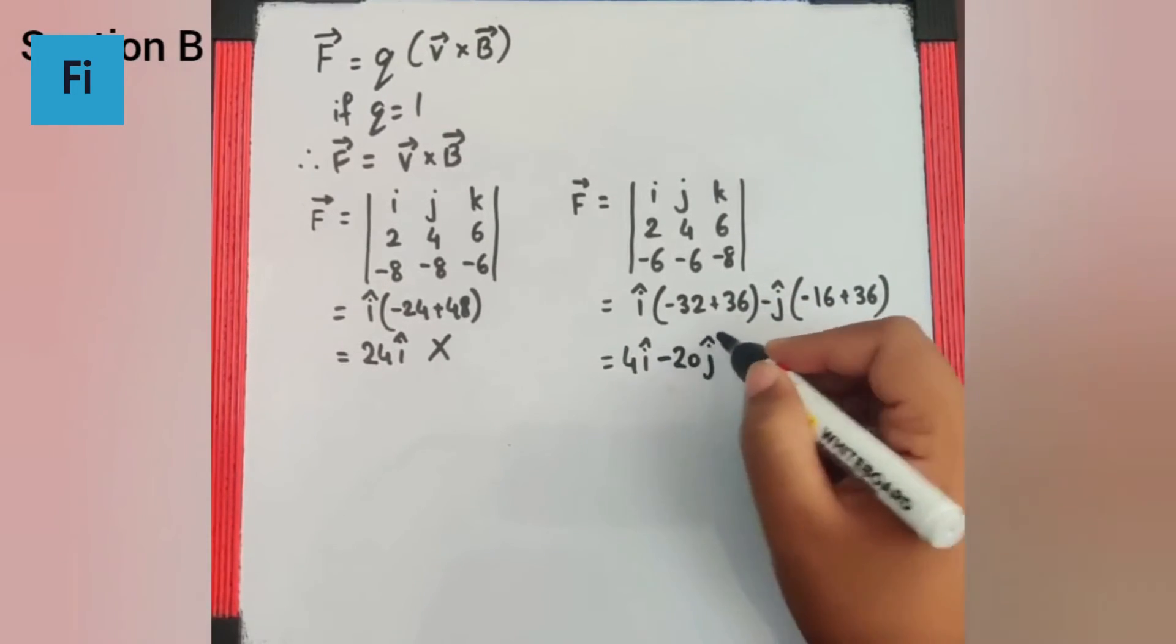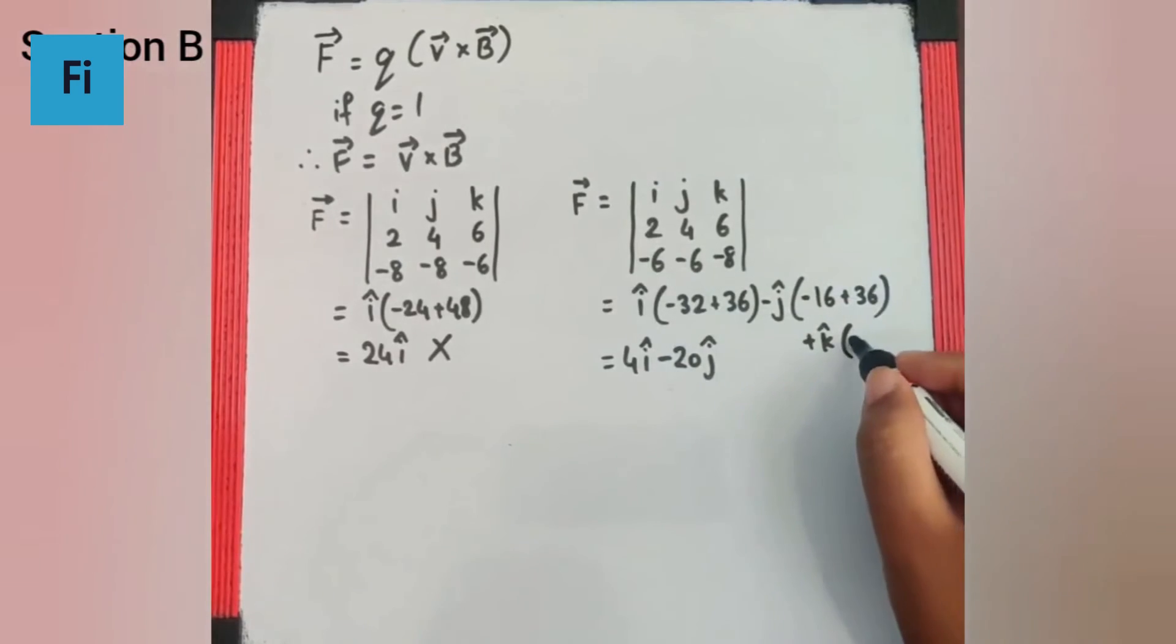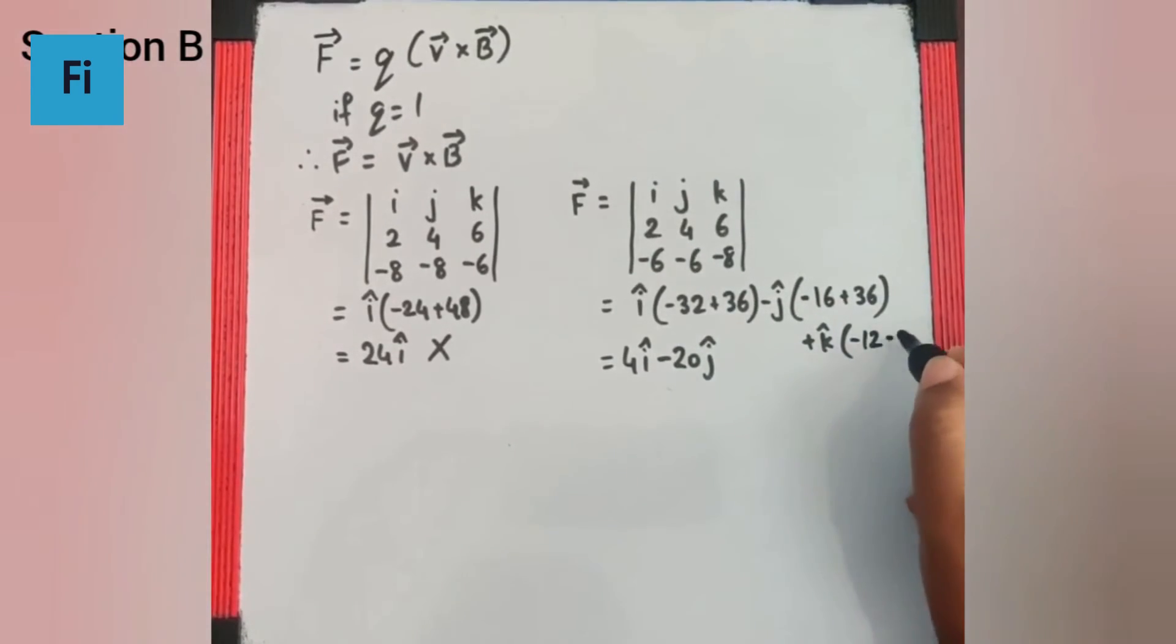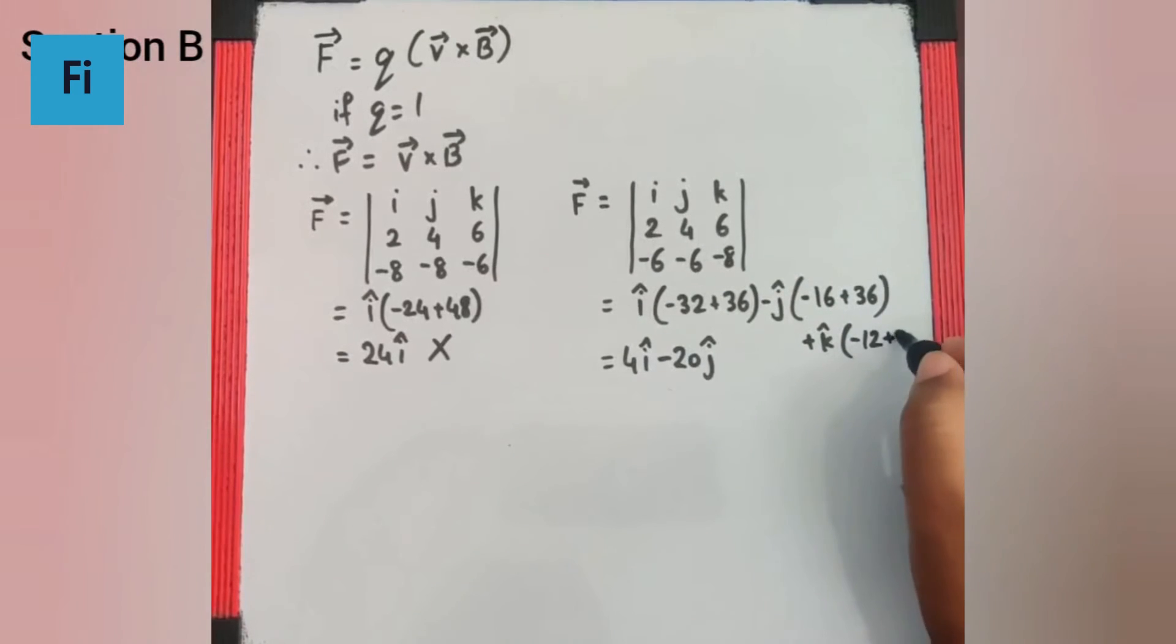Now if we talk about the k cap, it's going to be 2 into minus 6, minus 12, minus 6 times 4 are 24, minus minus becomes plus 24.